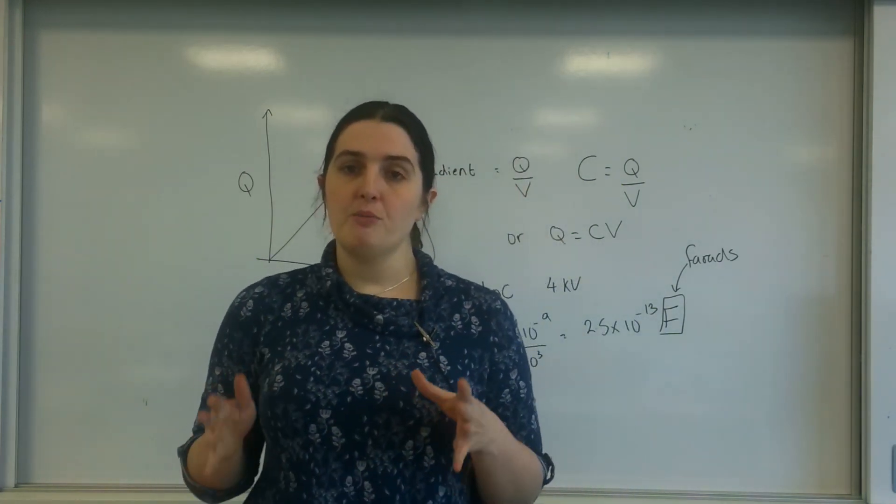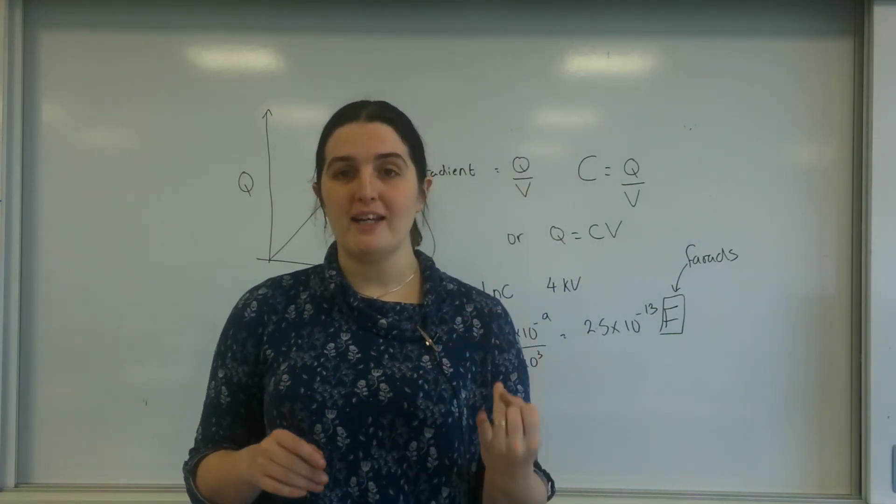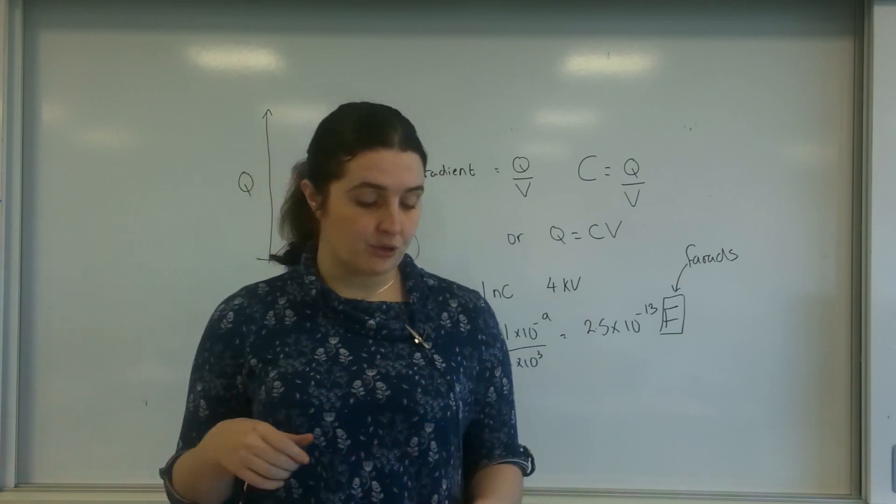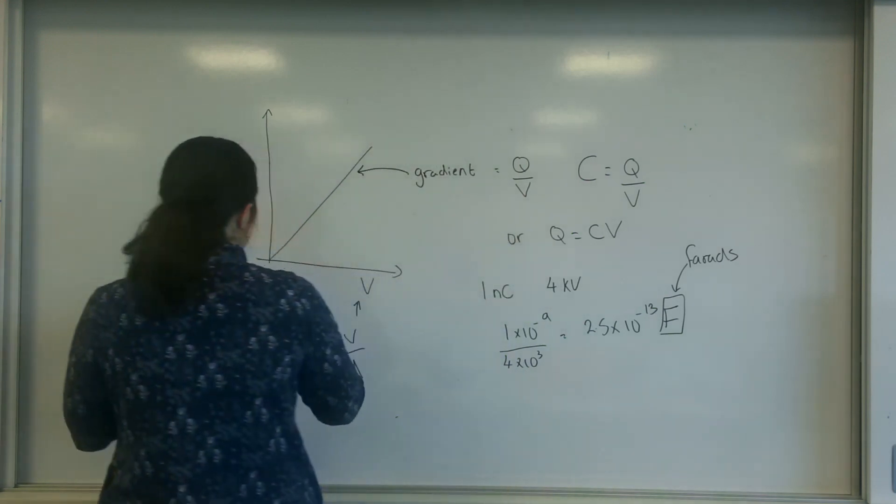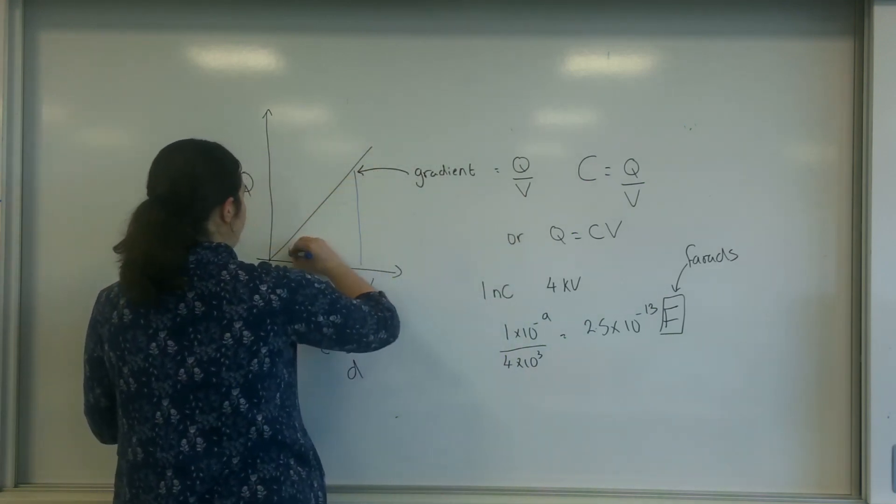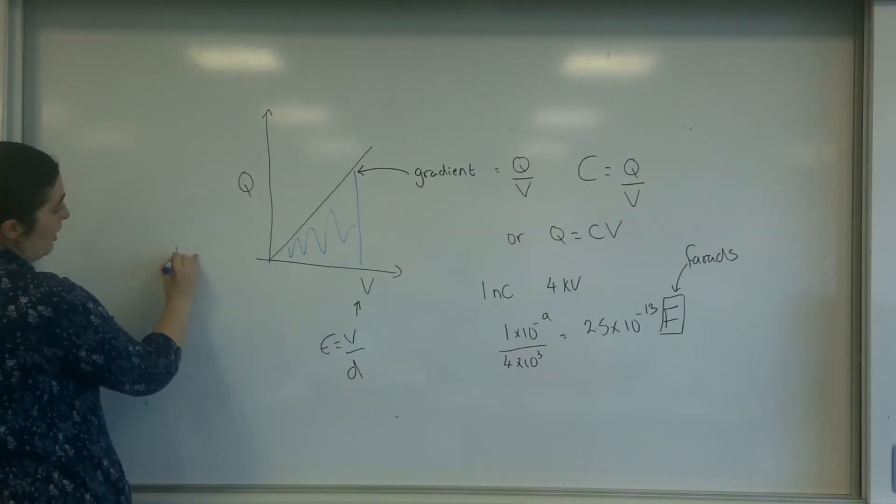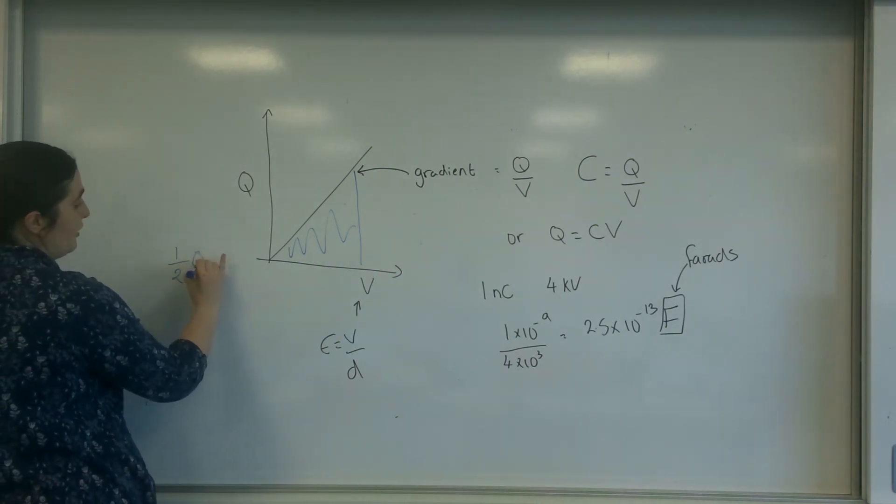Now with most things, the two most important parts of a graph are the gradient and the area underneath. And today I want to focus on the area underneath this graph. So the area underneath this graph here is a triangle, and that's going to be a half QV.